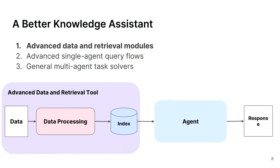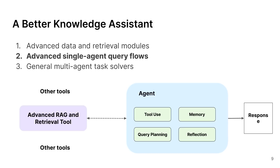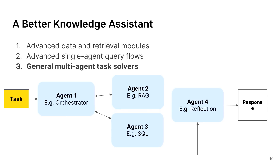We'll talk about three steps with some cool feature releases in the mix. The first step is advanced data and retrieval modules — even if you don't care about the fancy agentic stuff, you need good core data quality modules to basically help you go to production. The second is advanced single agent query flows, building some agentic RAG layer on top of existing data services as tools to enhance query understanding. And the third is this idea of a general multi-agent task solver, where you extend beyond the capabilities of a single agent towards multi-agent orchestration.